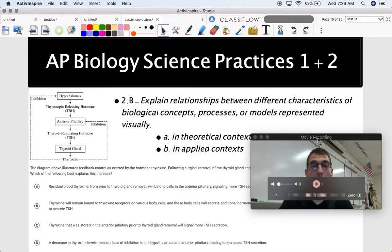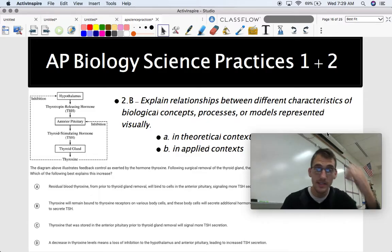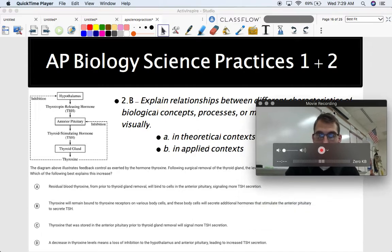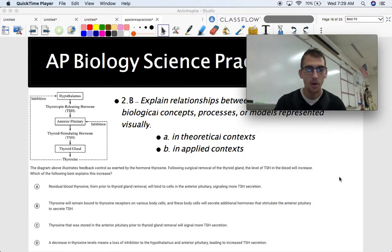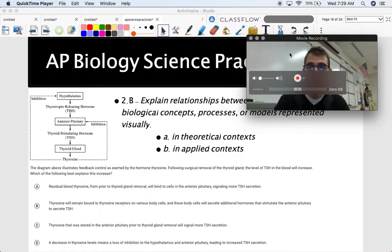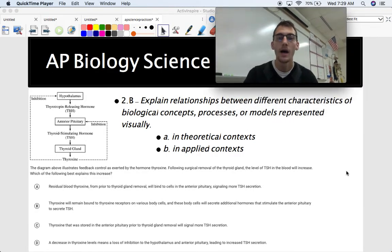So here's 2.B. Explain relationships between different characteristics of biological concepts, processes, or models represented visually in theoretical or applied context. So here's a multiple choice question. It's asking you to make an explanation based on a visual like this. Here we have a flow chart, and this is relating to how the hypothalamus, and this is showing a feedback loop.